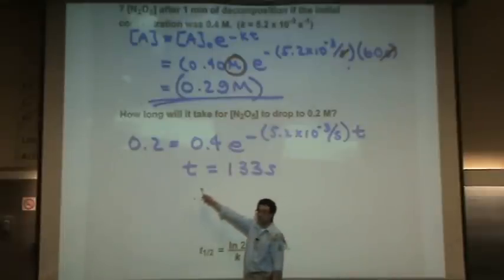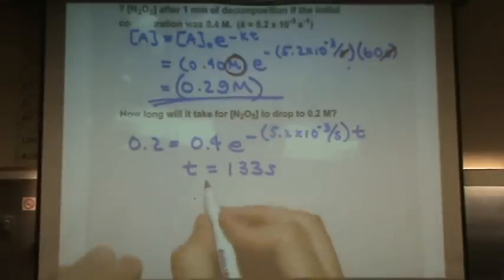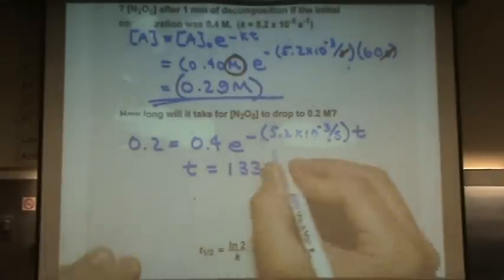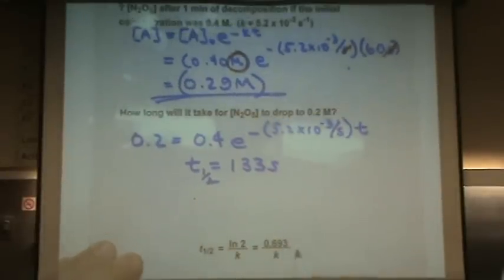This is a special time. What is it? This is a half-life. I just dropped to half. I went from 0.4 to 0.2. So I could have calculated it using this equation down here.